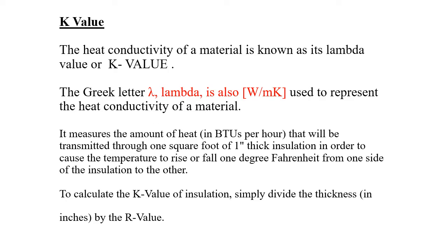The K value is represented by lambda or K. K value is the heat conductivity of a material, also represented as lambda, and its unit is watts per meter Kelvin. The K value is the amount of heat transmitted through one square foot of one-inch thick insulation to cause the temperature to rise or fall one degree Fahrenheit from one side to the other. K value is a property of the material itself, at the element level.